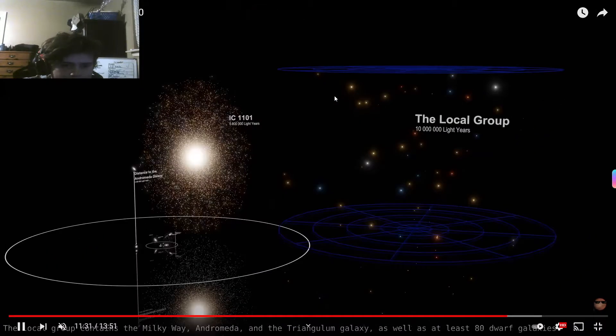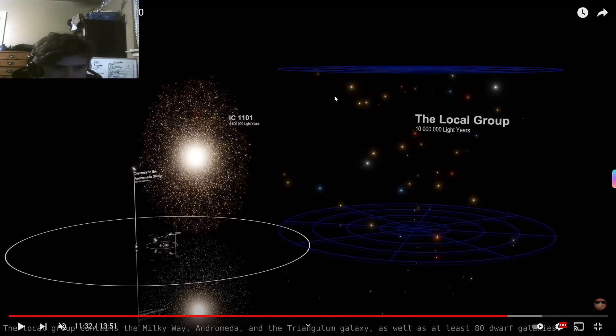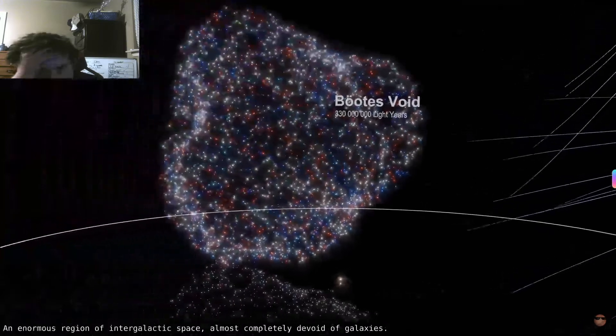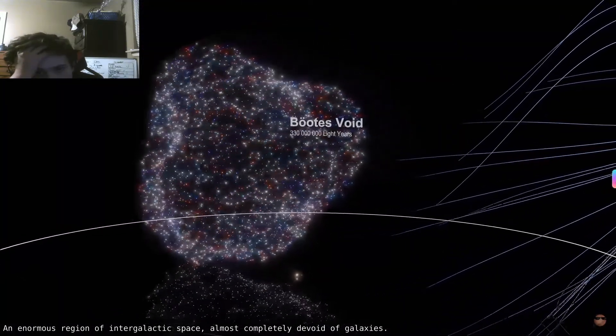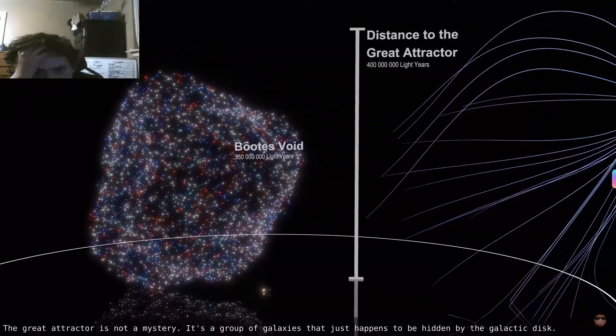The local group contains the Milky Way, Andromeda, and the Triangulum galaxy, as well as at least 80 dwarf galaxies. My gosh. I don't even know how stuff can get this big. How?